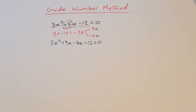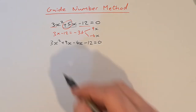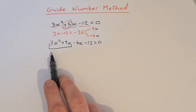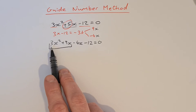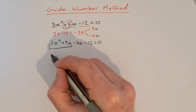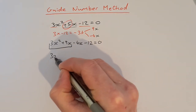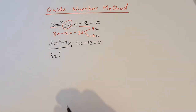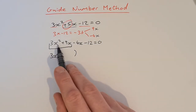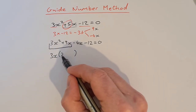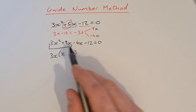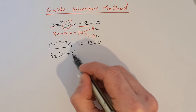Now what we do is we factorize by grouping. We take the first two terms and find the highest common factor. The highest common factor between 3x squared and 9x is 3x. If we take 3x out of the first term we're left with x, and if we take 3x out of the second term we're left with plus 3.